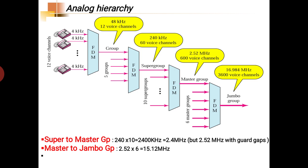Next is the analog hierarchy. Today we are not exclusively using this; we use time division multiplexing because in today's era all telephone communication is based on analog plus digital communication. At some places there is analog communication, then it is converted into digital, digital to analog, and at some places converted into wave division or optical signals. This diagram indicates the typical frequency division multiplexing hierarchy.